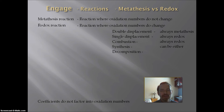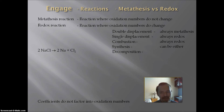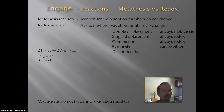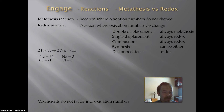The last type of reaction is decomposition. An example is sodium chloride decomposing into sodium and chlorine. On the reactant side, sodium is a monatomic ion with a charge of plus 1, so its oxidation number is plus 1. Chloride is a monatomic ion with a charge of minus 1, so its oxidation number is minus 1. On the product side, sodium is in its elemental form so its oxidation number is 0, and chlorine is in its elemental form so its oxidation number is also 0. Sodium goes from plus 1 to 0 and chlorine goes from minus 1 to 0, so this decomposition reaction is a redox.